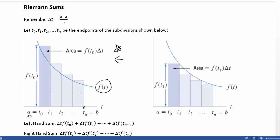Let's examine the area of one rectangle, starting with the first one. The width of every rectangle is delta t, and to get the area we do width times height. For the first rectangle, the height will be f of t sub zero. Two points define this rectangle — t sub zero and t sub one, the left and right points. Since we're doing a left-hand estimation, it's the leftmost point that determines the height. To get that height or y-value, we plug t sub zero into our function f of t. So the area of this rectangle is delta t times f of t sub zero.